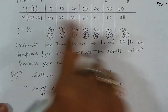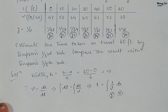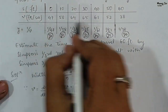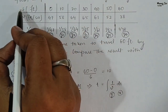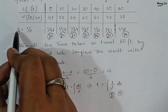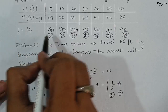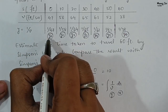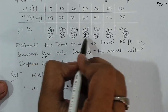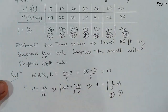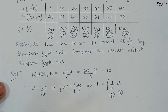We draw a table with columns x and y (that is 1/v). The values y₀, y₁, y₂, y₃, y₄, y₅, y₆ are all written here.